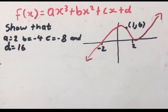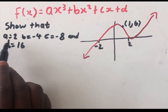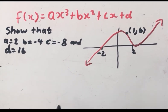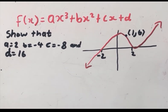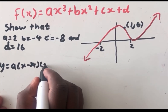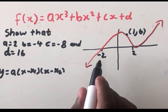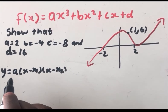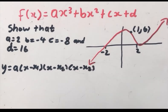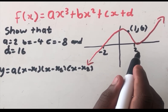Here is another situation. In this case, we have got two x-intercepts instead of three. The question says show that a = 2, b = −4, c = −8, and d = 16. We are given two x-intercepts. The moment we are given x-intercepts, we know to use the x-intercept form. But we cannot make it two brackets simply because there are two x-intercepts — that would give a parabola instead of a cubic graph. It still has to be three brackets.